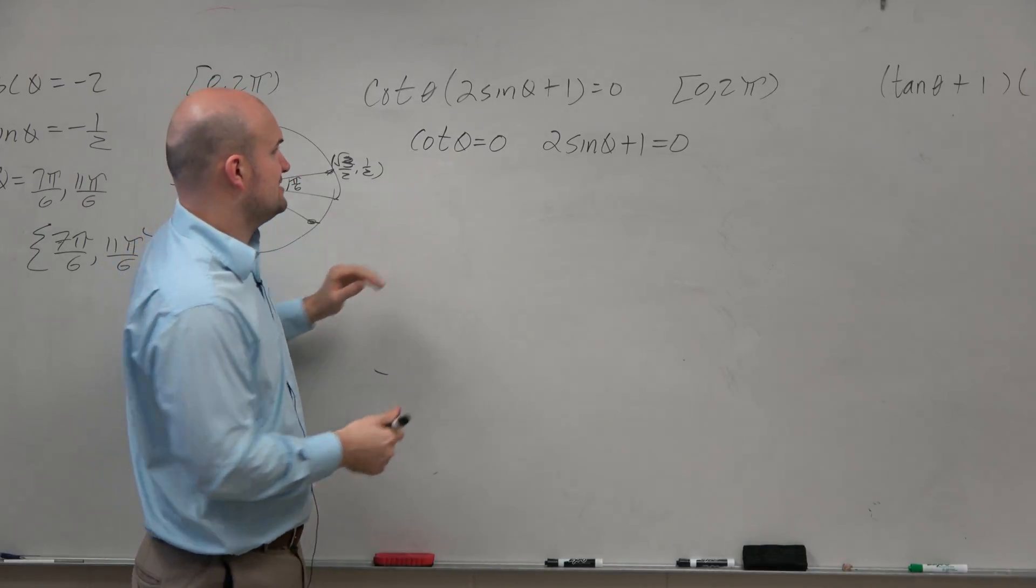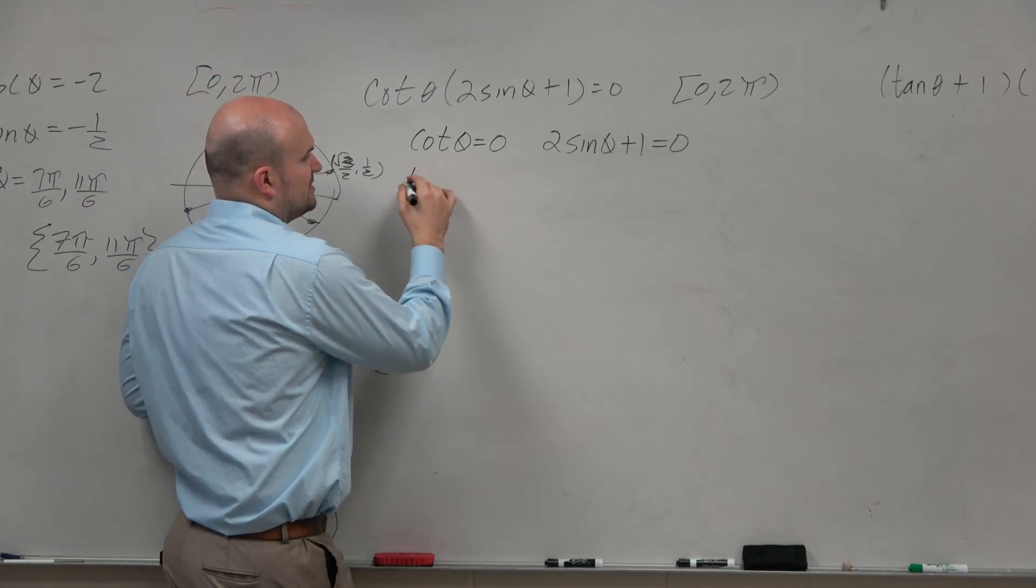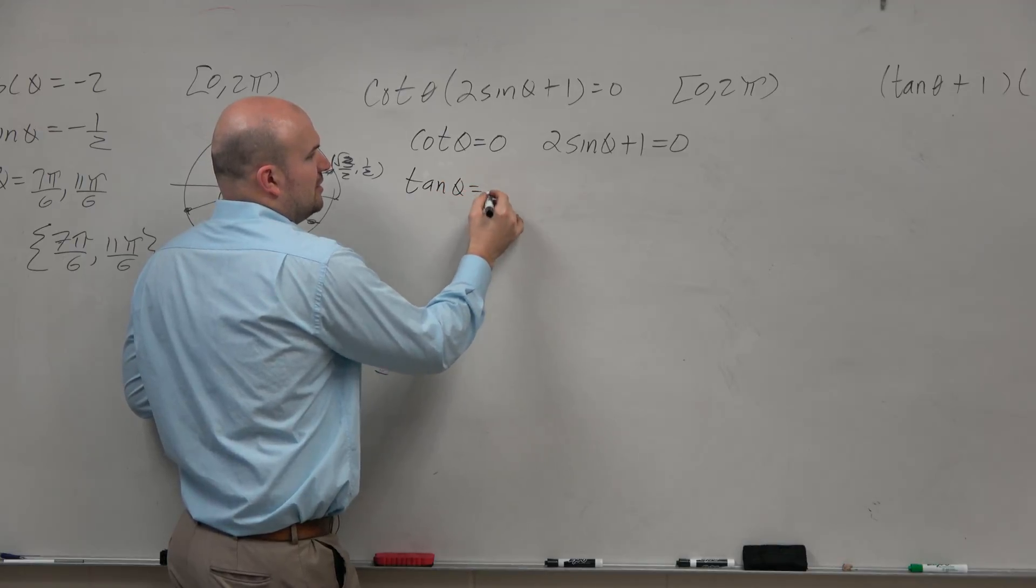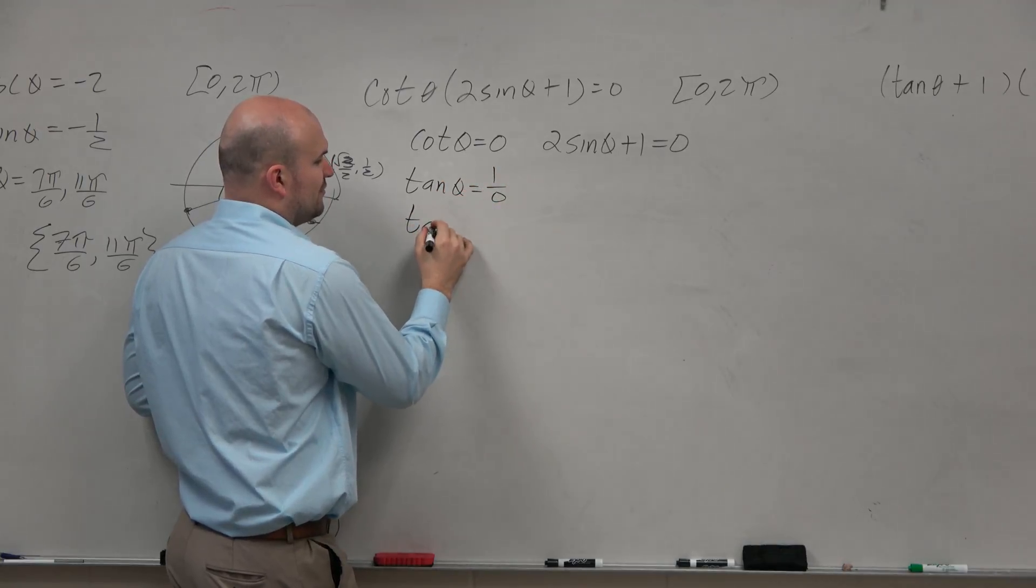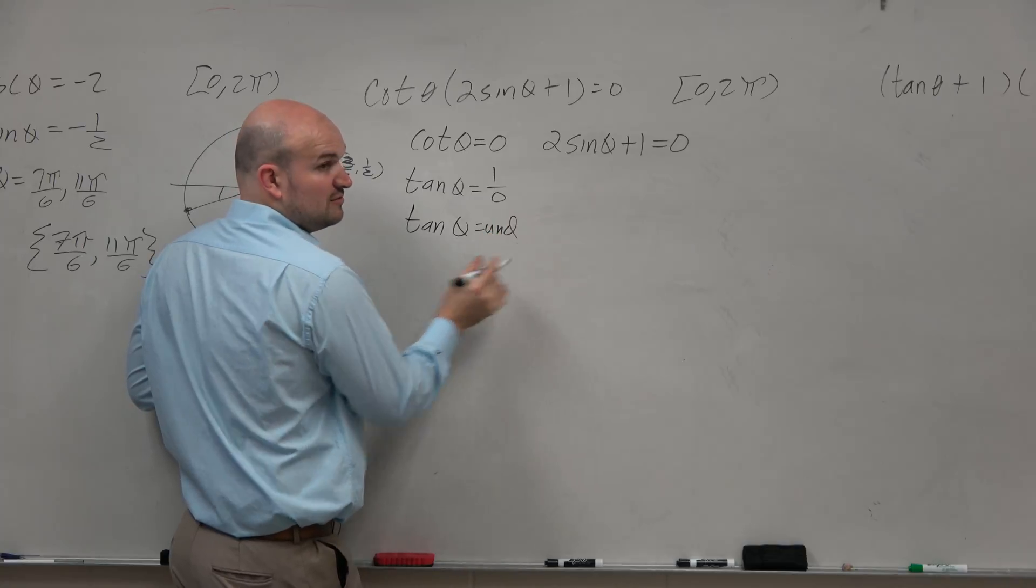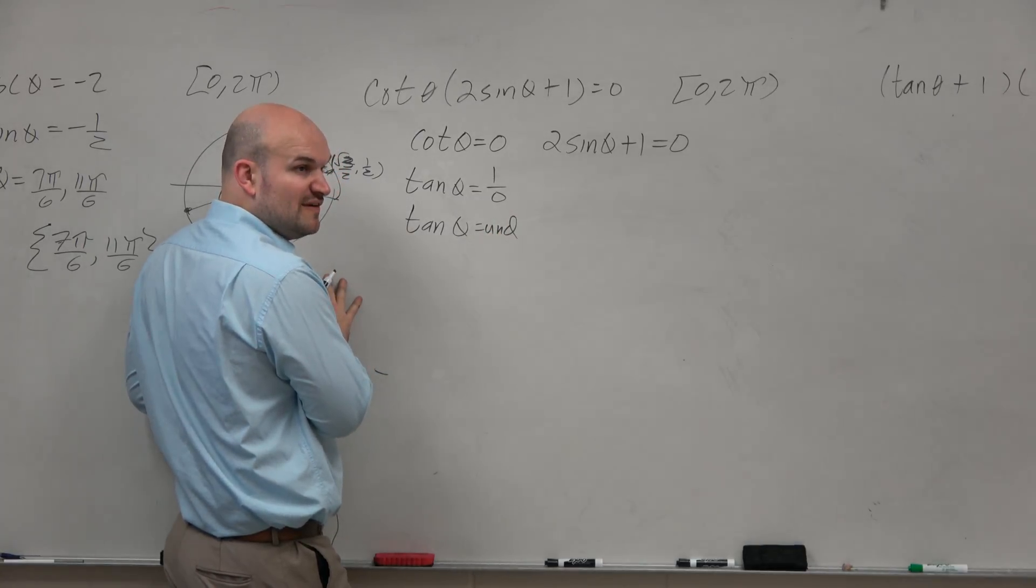Cotangent of theta, I can think of that as saying that is really the same thing as tangent of theta, 1 over 0. So I'm really looking for when is the tangent undefined, right? What angles make tangent undefined?